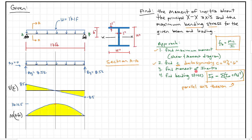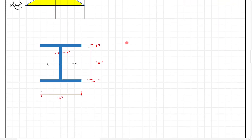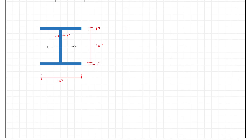The next thing we want to do is find the moment of inertia, and specifically I want to demonstrate the use of the parallel axis theorem. We could take the moment of inertia defined by the 12 by 12 box and subtract out the voids, but instead let's use the parallel axis theorem. The parallel axis theorem says the moment of inertia of the composite shape equals the sum of the individual moments of inertia of different sections plus the area times the distance from the principal axis squared. We add all those up and we get our answer.